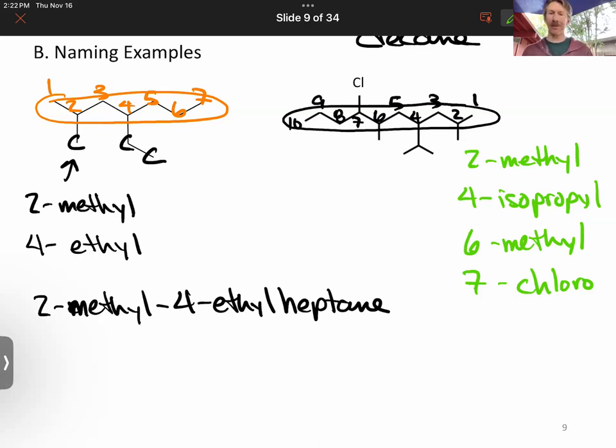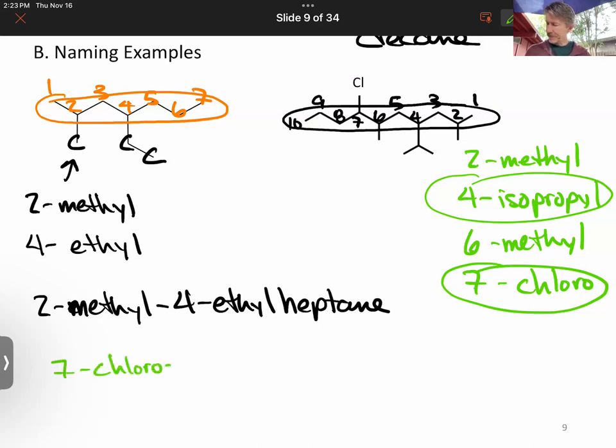There are many more substituents that have names. Those are going to be the only ones that we will do. So now this is going to be, alphabetically, chloro, and then isopropyl, and then we have a dimethyl. So this one over here is going to be 7-chloro, 4-isopropyl, because i is next alphabetically. There should be dashes between each of the numbers and each of the letters. And then 2,6-dimethyl-decane. There's no space between dimethyl and decane. Those are two examples of naming alkanes.